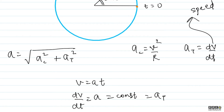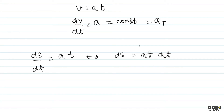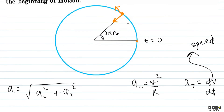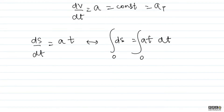Now we need to find the speed at that particular moment. We know speed v = ds/dt = at, so ds = at·dt. At t = 0, distance covered is 0. The arc length AB covered = r·theta = r·(2πn), so total distance traveled = 2πrn. Integrating ds = at·dt from 0 to t0, we set the result equal to 2πrn.